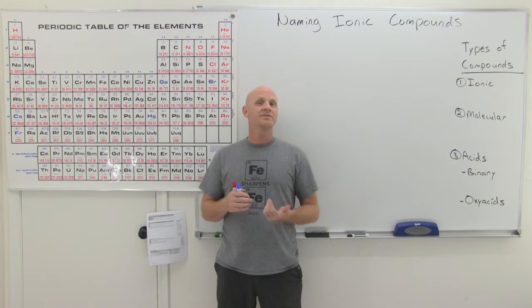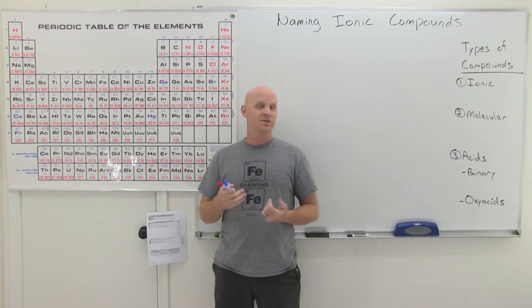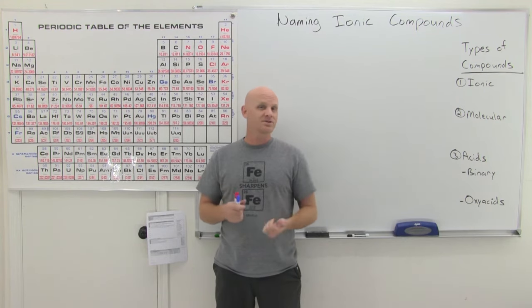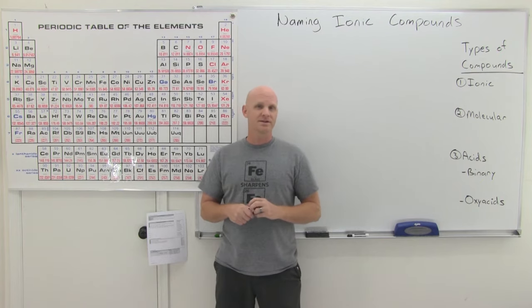We're going to identify how you recognize if you've got an ionic compound, a molecular compound — specifically a binary molecular compound — or if you've got either a binary acid or an oxyacid first, and then we'll get into naming and work several examples.